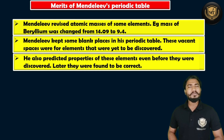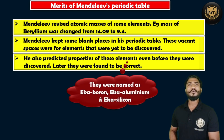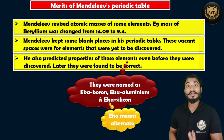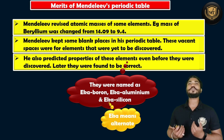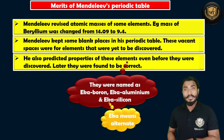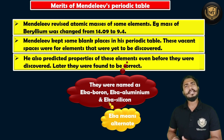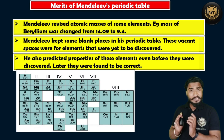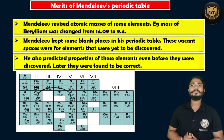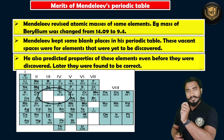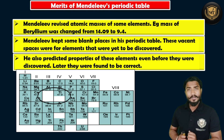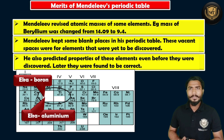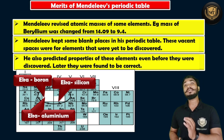He was so brilliant that he gave these undiscovered elements some names: Eka Boron, Eka Aluminium, and Eka Silicon. 'Eka' means alternate. So Eka Boron is the element alternate to Boron, Eka Aluminium is alternate to Aluminium, and Eka Silicon is alternate to Silicon. If you observe the table, there are blank spaces: the first blank alternate to Boron is Eka Boron, the blank alternate to Aluminium is Eka Aluminium, and the blank alternate to Silicon is Eka Silicon.